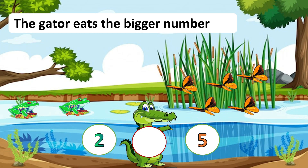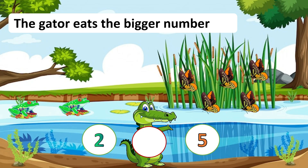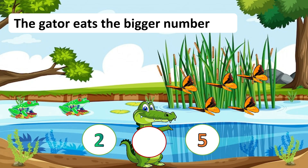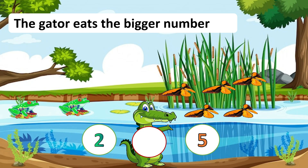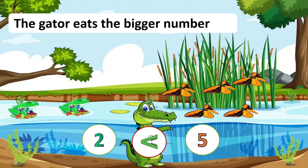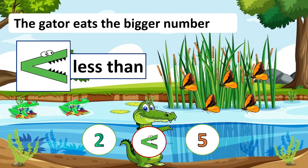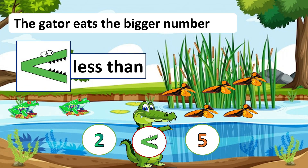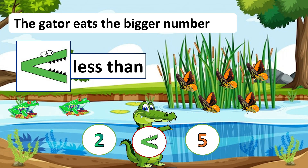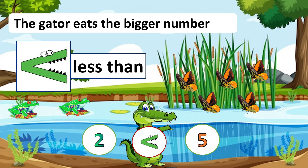Which is the bigger number — two or five? It's five. The gator will eat the butterflies. Two is less than five. This symbol is less than. We say two is less than five.